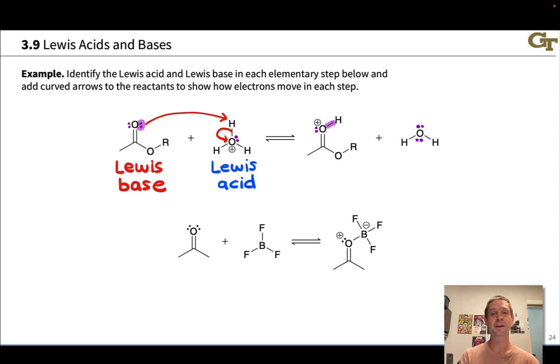Now in the second example, there are no protons to be found, but we can again recognize where lone pairs are converted into bonds, where electron pairs are donated and accepted, and that kind of thing. So we notice, for example, that this lone pair on oxygen, highlighted in purple, is converted into a new bond to the boron center, and we can draw a curved arrow to depict that.